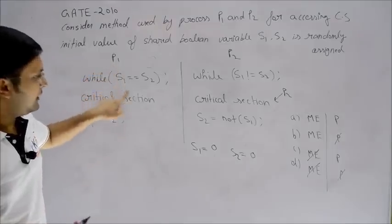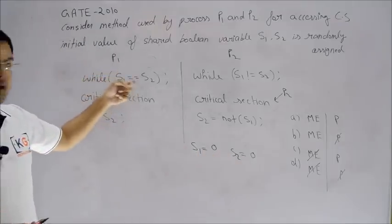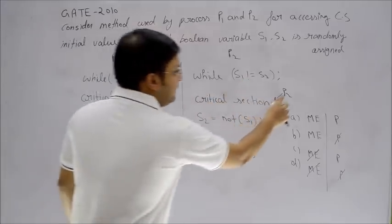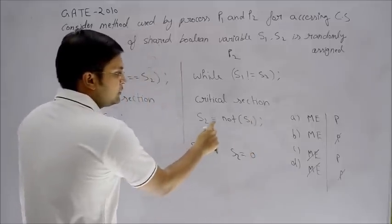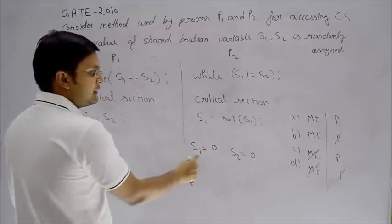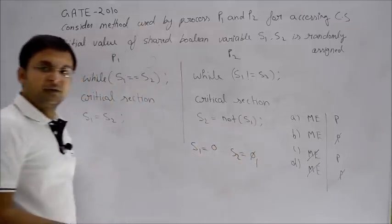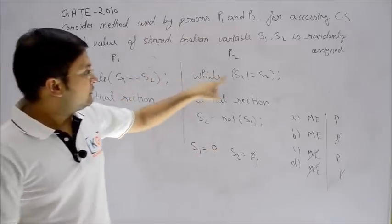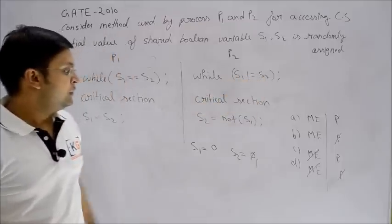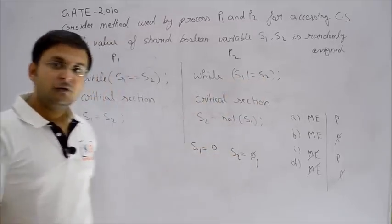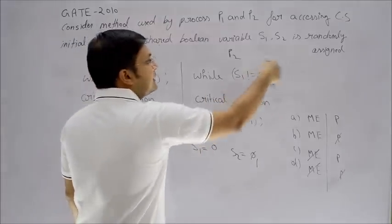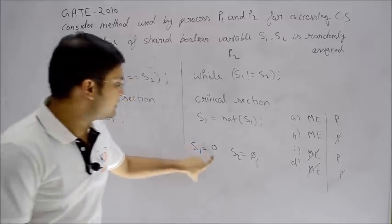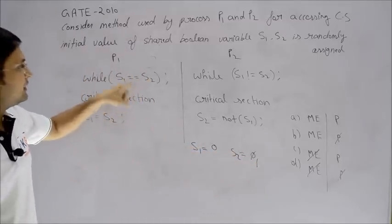Meanwhile, P1 cannot enter the critical section as long as both values are the same, keeping its condition true. When P2 comes out of the critical section, it sets s2 = NOT s1. Since s1 is 0, s2 becomes 1. Now if P2 tries to enter again, it checks s1 != s2, i.e., 0 != 1 — condition holds, so P2 cannot re-enter. Now for P1: s1 == s2 becomes 0 == 1, which is false, so P1 can now enter the critical section.